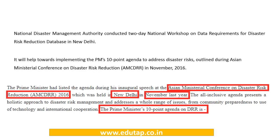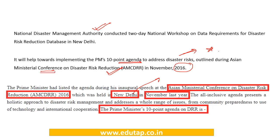There was news regarding the National Disaster Management Authority, NDMA, conducting a two-day national workshop. The important context here is the Asian Ministerial Conference on Disaster Risk Reduction, held in New Delhi in November 2016, where India put forth a 10-point agenda by the Prime Minister to address disaster risks. Kindly have a look at these 10 points — it is not necessary to memorize each one, but be aware of the agenda.